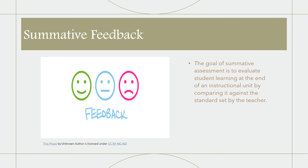One type of formal feedback is summative feedback. The goal of summative feedback is to evaluate student learning at the end of an instructional unit by comparing it against some standards or benchmarks. Summative feedback contains detailed comments from the teacher related to the lesson or assignment, kindly explaining how the student was graded and how they can improve for next time.